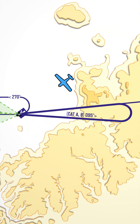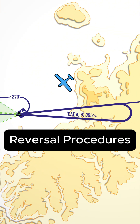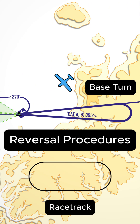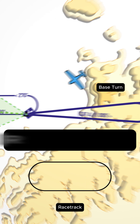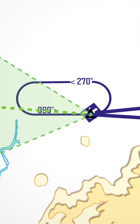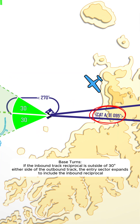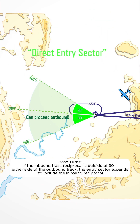When entering a reversal procedure such as a base turn or racetrack pattern, you can continue outbound if you arrive from within 30 degrees either side of the outbound track. This is known as the direct entry sector.